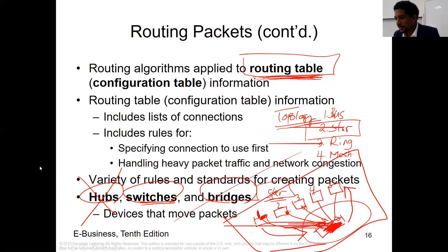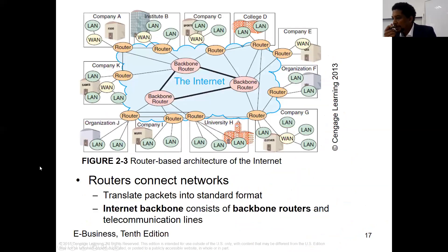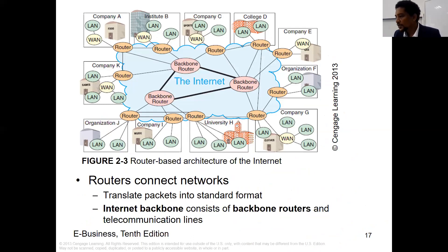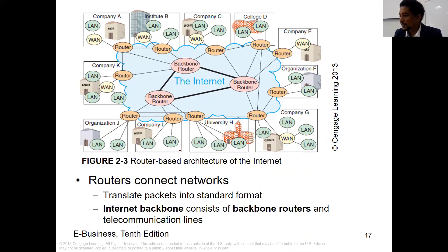Let's continue from here. This is a very good example of what routing is, where computer networks are, and where the topology is. Every LAN you see here consists of a topology. For example, you can see that this is the internet, because there are so many companies, organizations, and institutions involved.